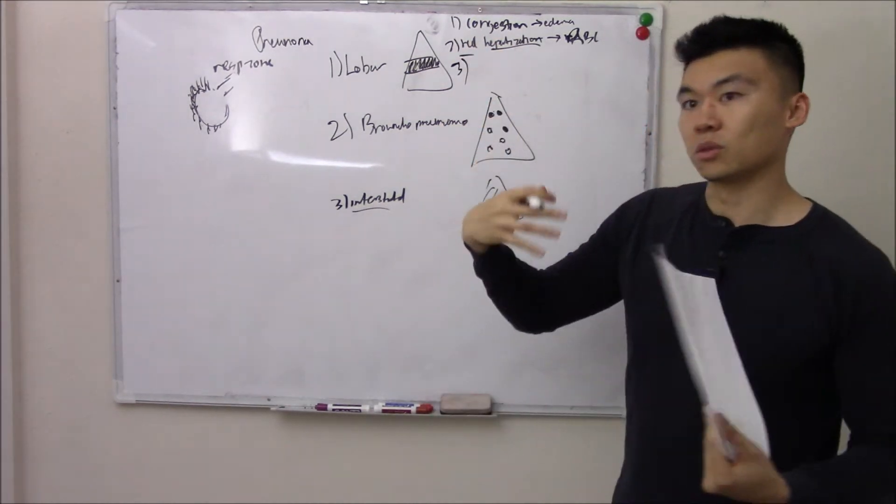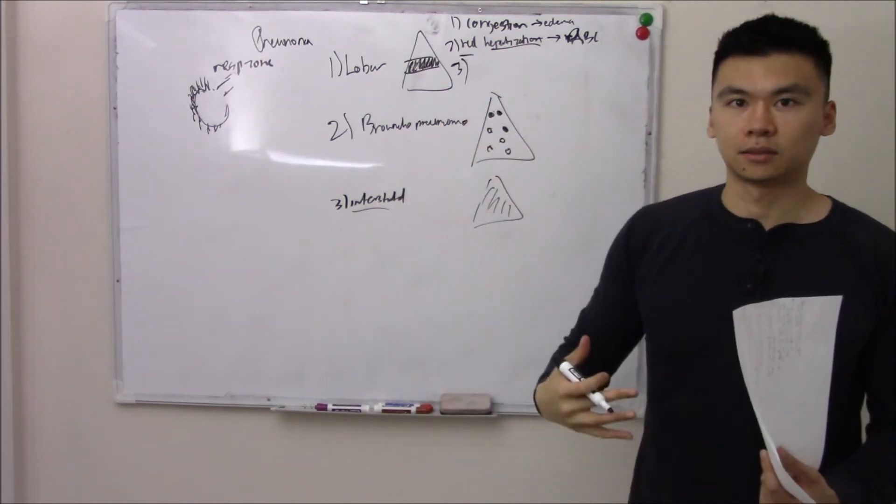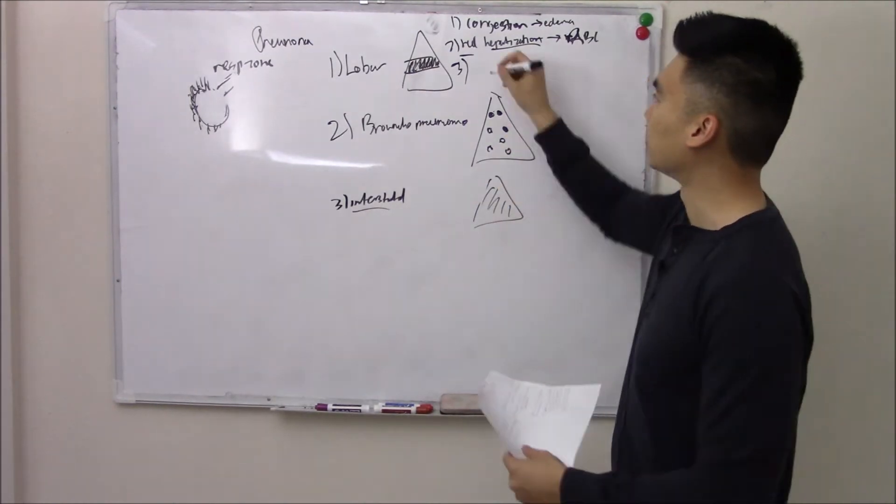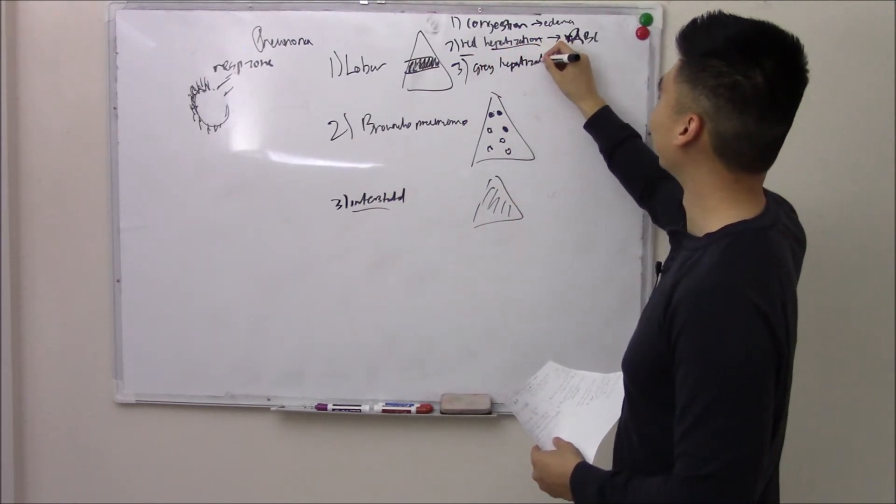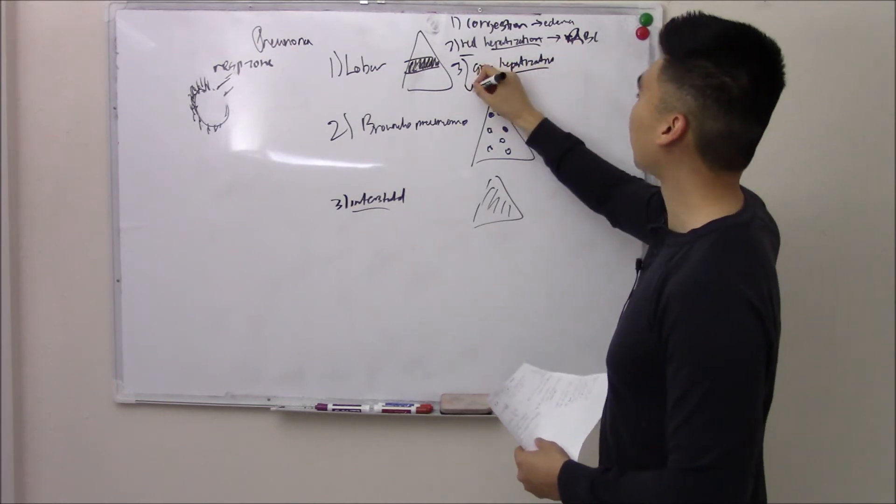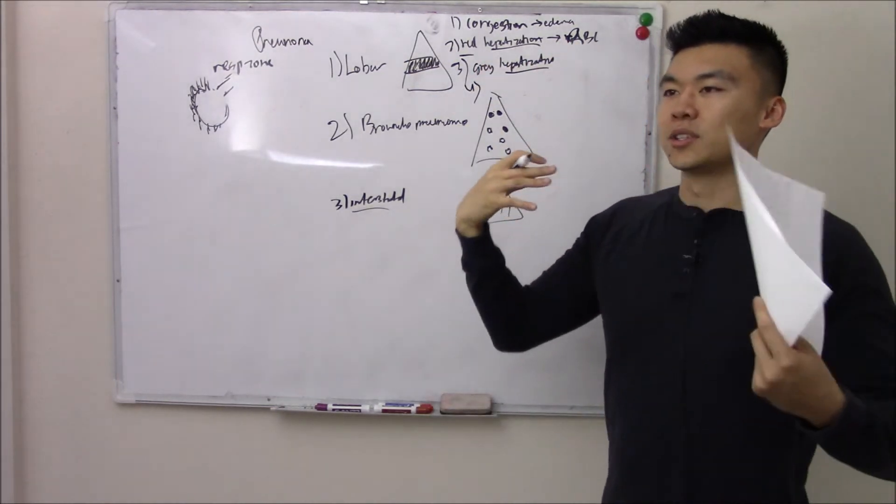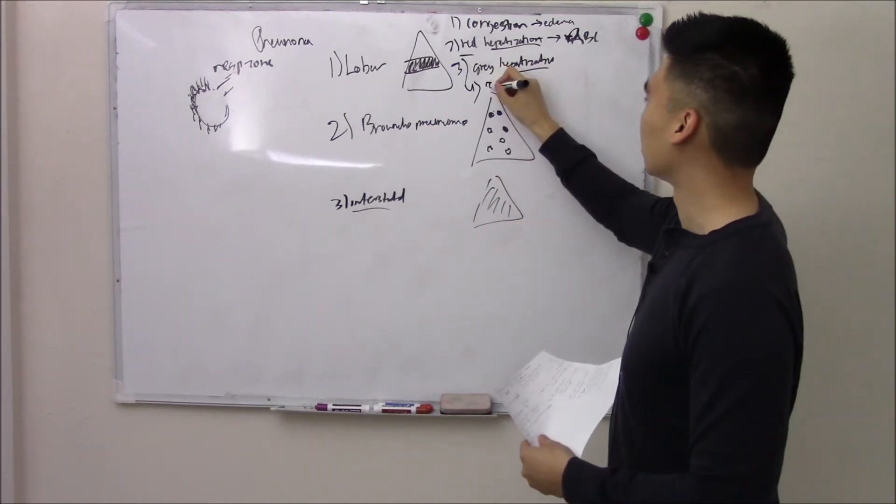But eventually those red blood cells will clear and you'll be able to remove the gunk. So it'll turn from red to gray. We call that gray hepatization. Still kind of hard. That's why it's so-called hepatization. But finally you'll resolve. Your tissues will resolve. Things will get back to normal. We call that resolution.